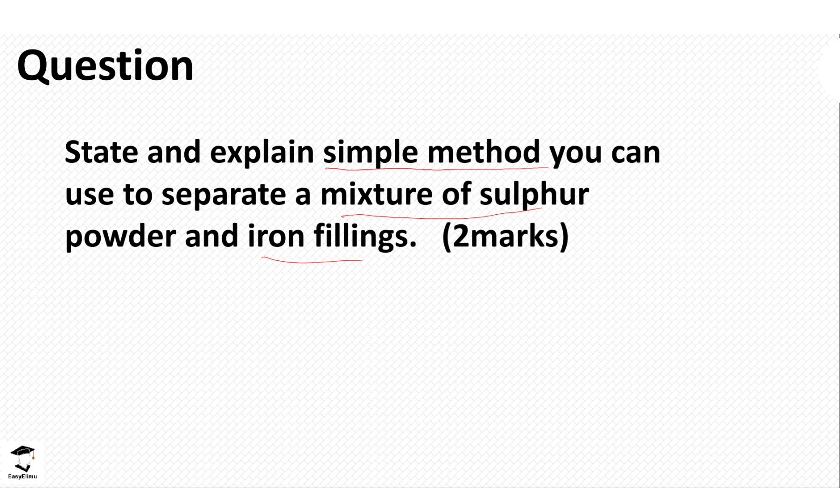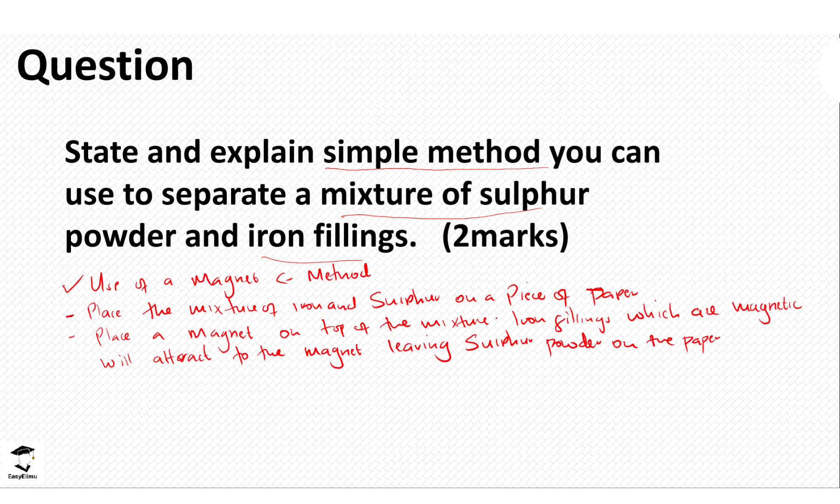And then the process will be the mixture of iron and sulfur. We will place the magnet on top of this mixture, and iron, which is magnetic in nature, is going to attract itself on the magnet. So the sulfur particles or sulfur powder is left on the piece of paper. So that is what we have discussed. Method, use of a magnet. You place both iron and sulfur in a piece of paper. You place the magnet on top of the mixture. The iron filings will be attracted to the magnet, and then this will leave the sulfur powder on the piece of paper. So this is a simple method to separate compounds that are magnetic from compounds that are not magnetic.